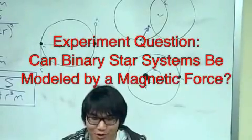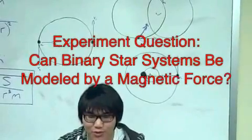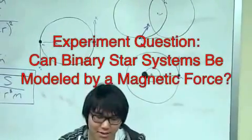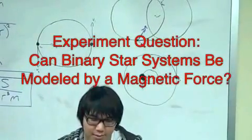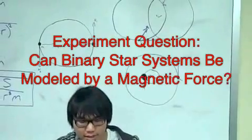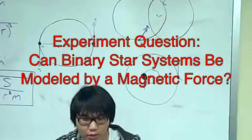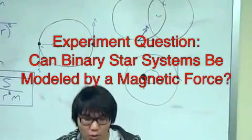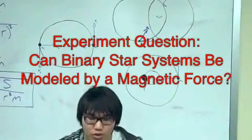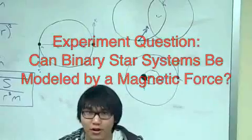Binary star systems are systems in which two stars are essentially orbiting their center of mass. These systems can have circular or elliptical orbits and are often unequal in size, causing the orbit around their center of mass to be skewed towards the larger star.